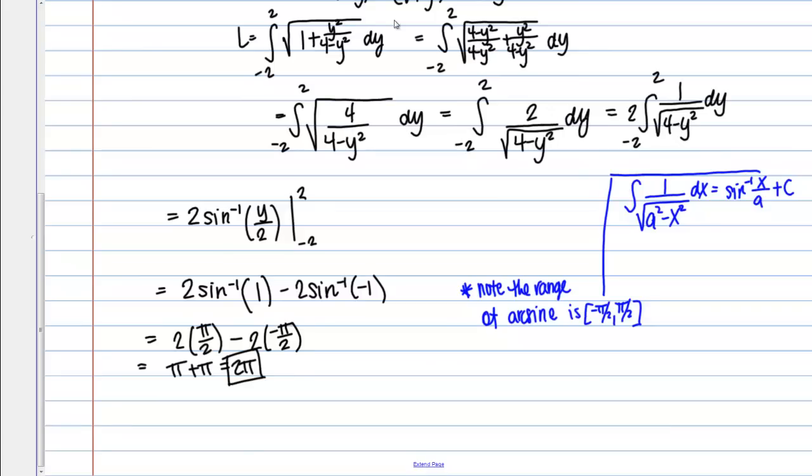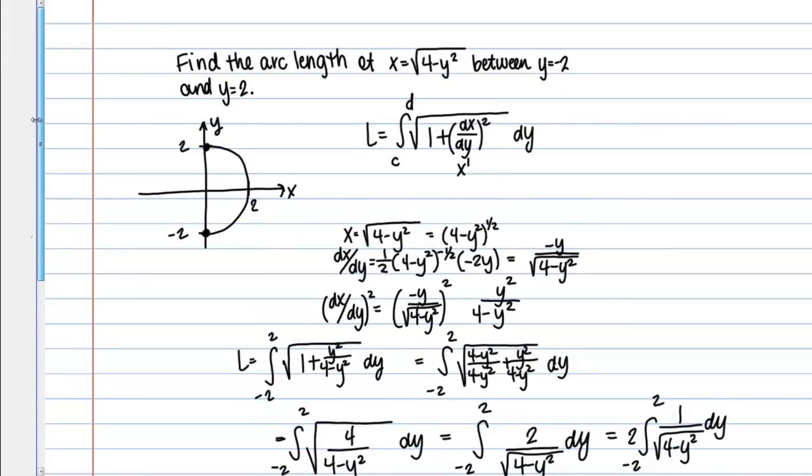So my arc length in this case then was 2 pi, and actually, let's see if that makes sense based on our picture because remember we drew this graph and we said it was a semicircle. So the circumference here, or this arc length, we could find it using circumference. It should be 1/2 times 2 pi r. The radius here is 2, so yeah, we get our 2 pi. So it looks like we did this correctly.